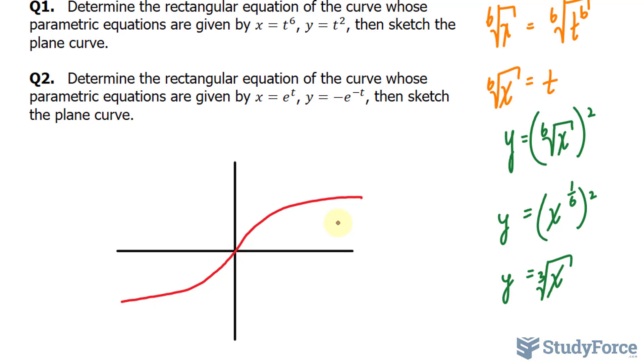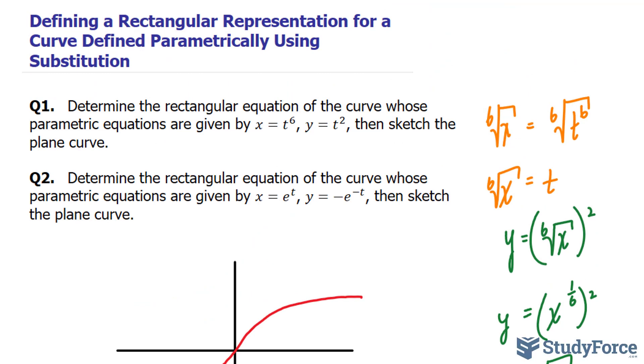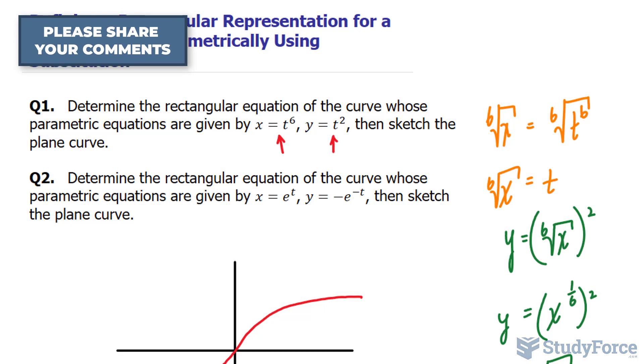When you do problems like these you want to make sure that the domain and range of the new rectangular equation that you found matches that of the original two parametric equations that were given. What I mean by that is take for example y is equal to t to the power of 2. Any value that I put in for t I'll get a positive y output.